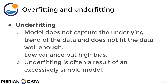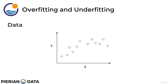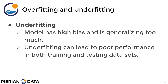Underfitting is often a result of an excessively simple model. Consider the same data set as before. If we were to underfit, that means we have a very simple model such as just a linear fit. While it may perform well for certain training points, eventually you'll see that for other unseen test points we've generalized too much and we're not fitting well to either the training set or the test set. When you underfit a model, it has too much bias and is generalizing too much. Underfitting can lead to poor performance on both the training set and the testing data set. That's why it's a little easier to catch underfitting rather than overfitting.